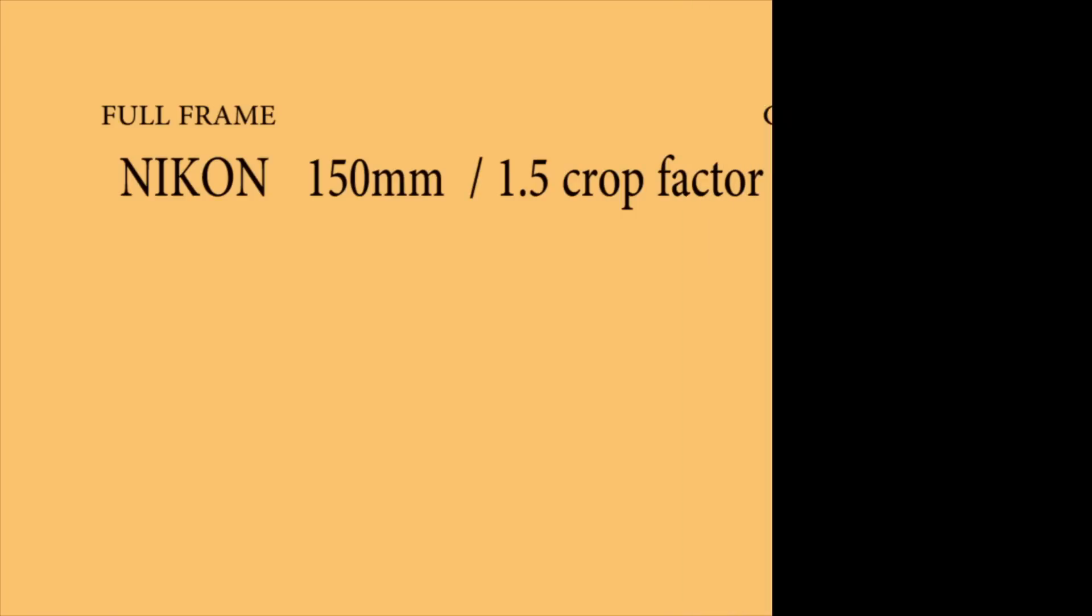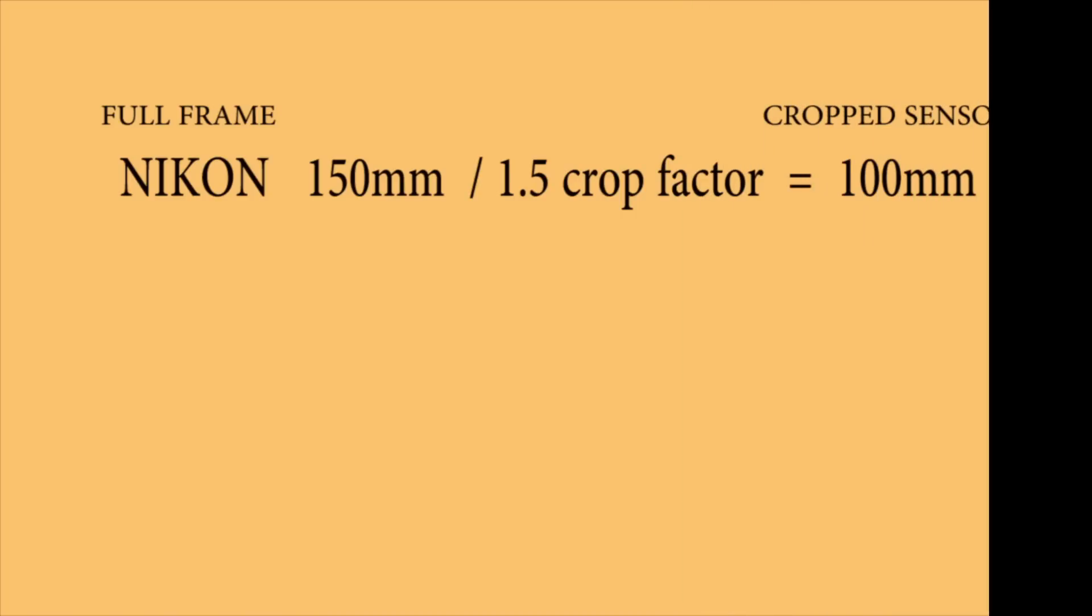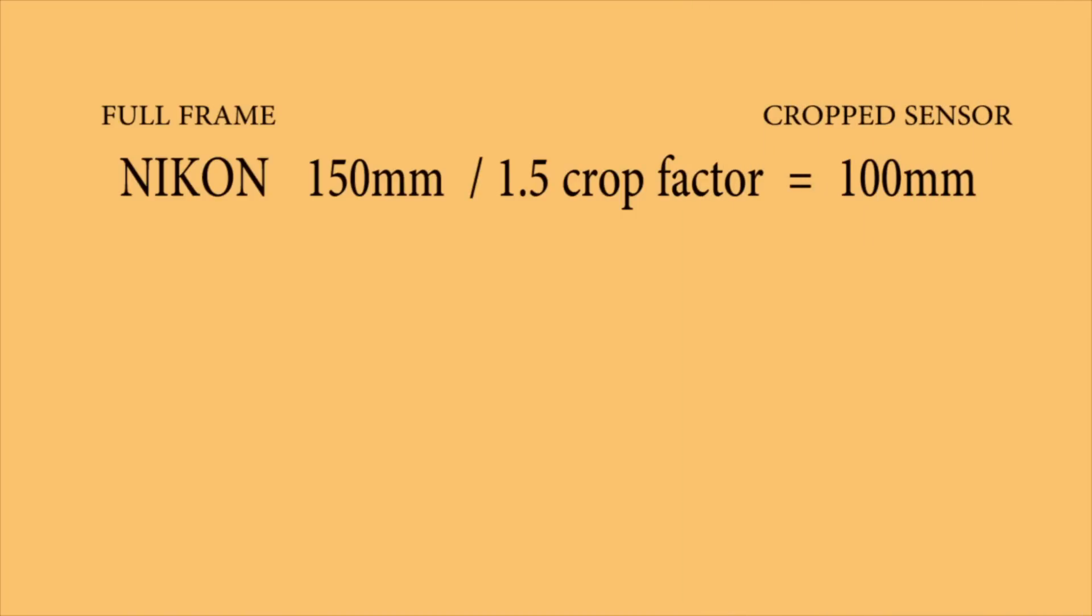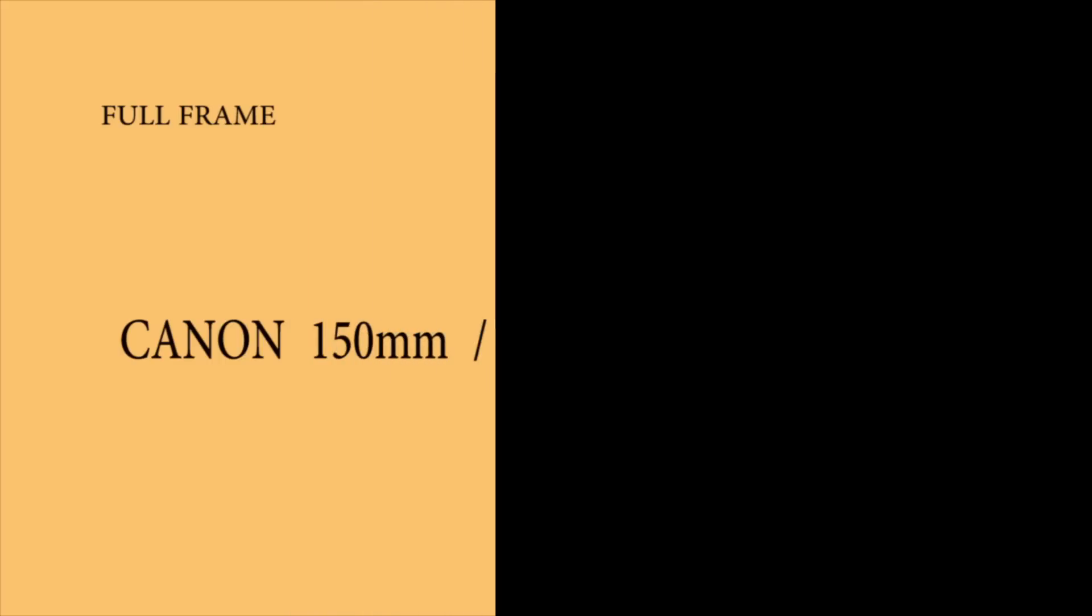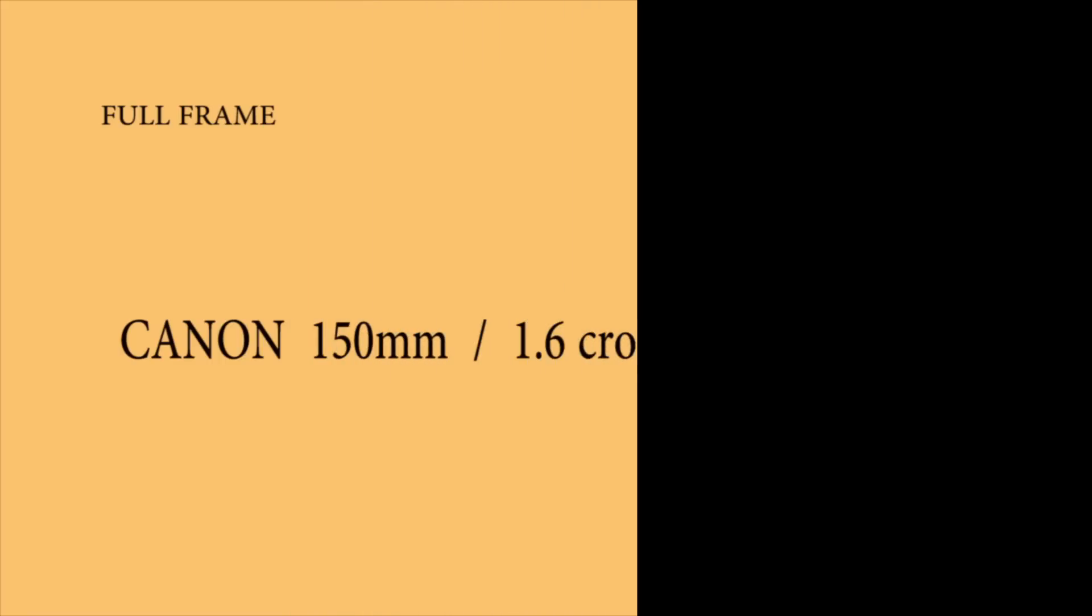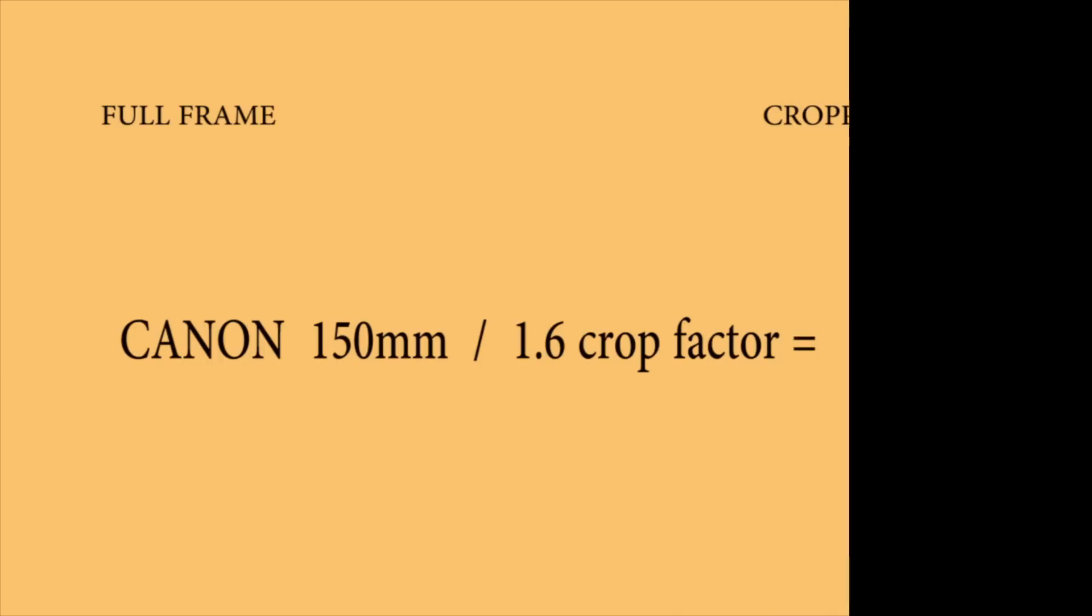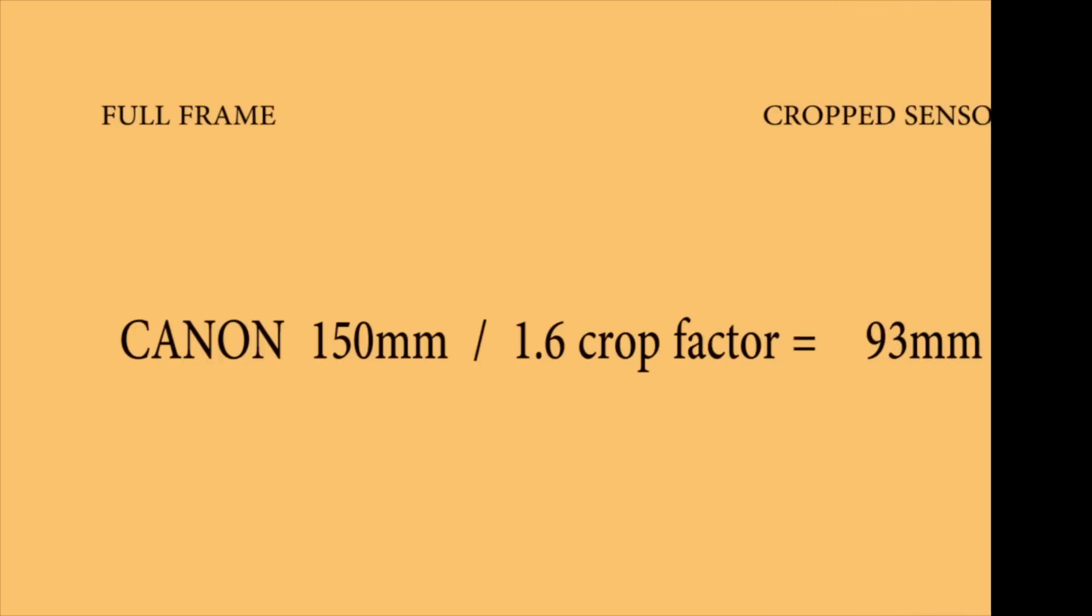So if we have a 150mm lens on a full frame camera, and we divide it by the 1.5 crop factor, we come to 100mm lens. What we're saying with that is that the 100mm lens will give us the same result as the 150mm lens on a full frame camera. Now for the Canon, if we have a 150mm lens on a full frame Canon, we divide it by 1.6, it means we need a 93mm lens to have the same result.